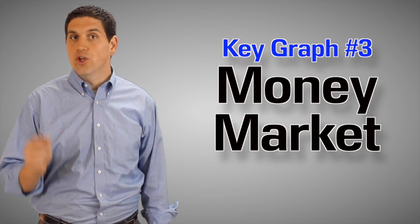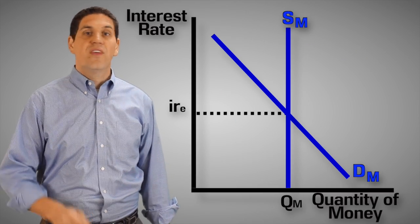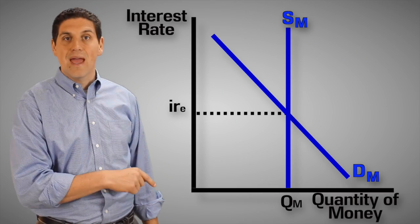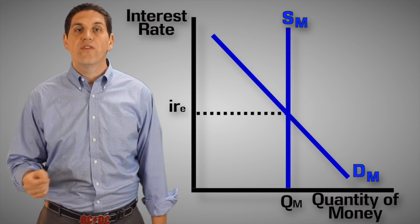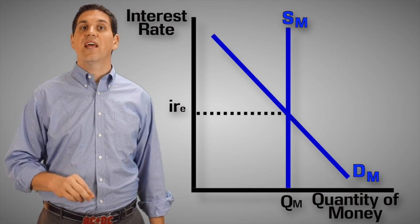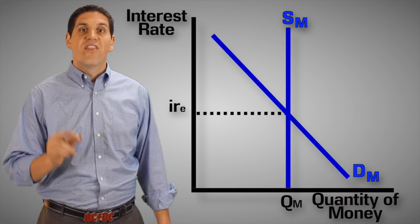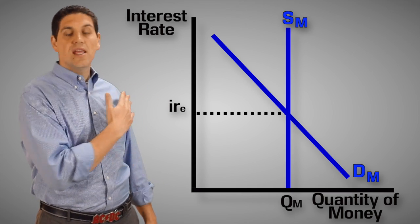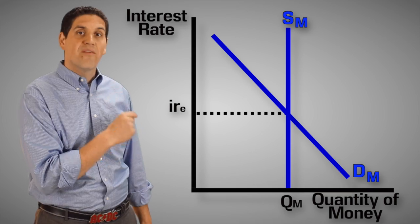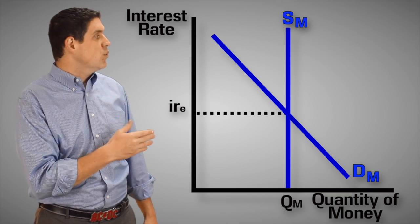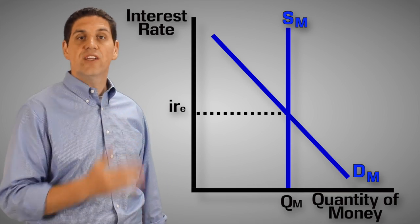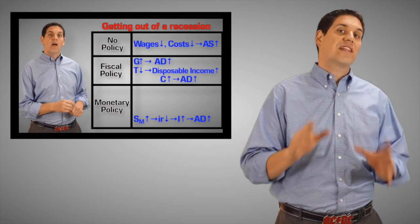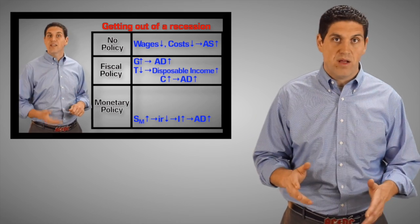The third graph that you need to know is called the money market. This is the supply and demand of money. The reason you need to learn this graph is to understand the idea of monetary policy. The Fed, or the central bank, can increase or decrease the supply of money, and this would change the interest rate. That change of interest rate would affect investment and aggregate demand. That's called monetary policy.